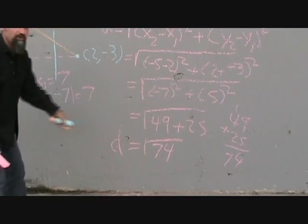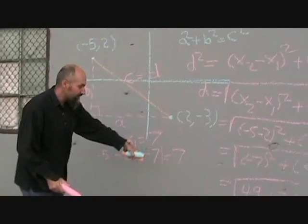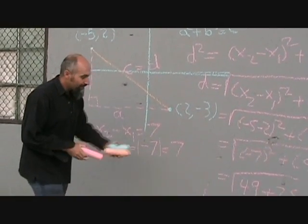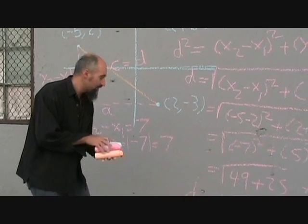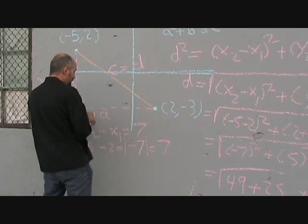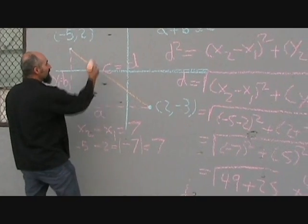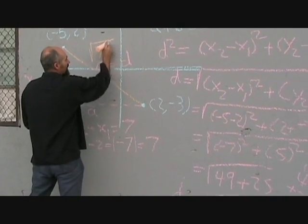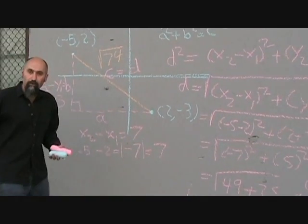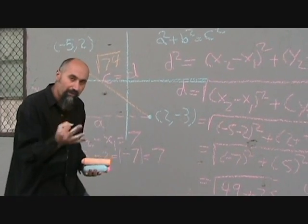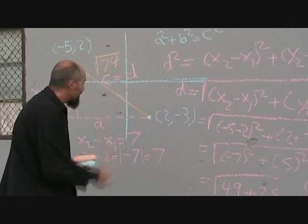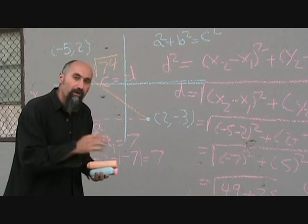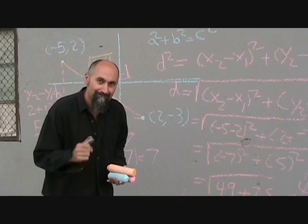So the distance between these two points is the square root of 74. Now that's not a perfect square, so all you do is you use your calculator to figure out what that number is. So the distance from here to here is the square root of 74. And that's how you figure out the three most important things with lines: the slope, the midpoint, and the distance. From there we can go on to equations of a line. Good luck.